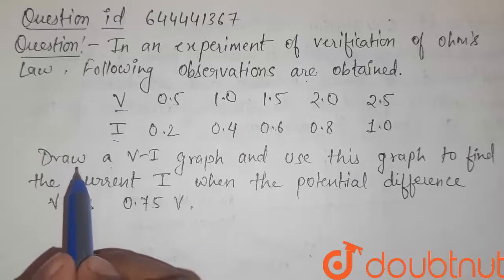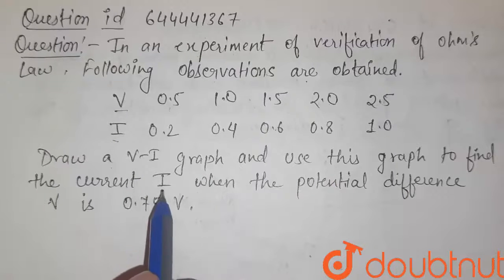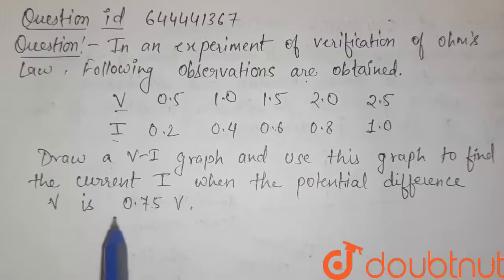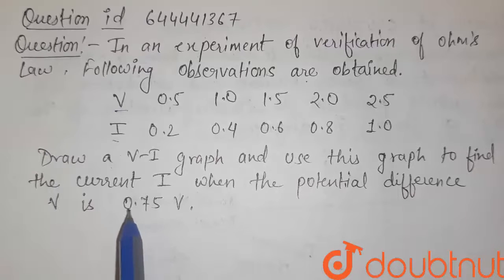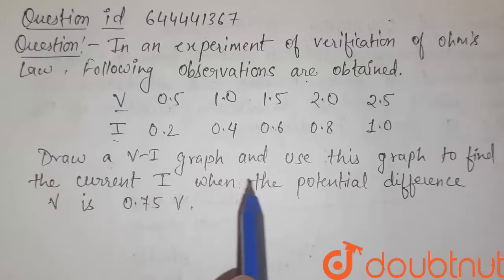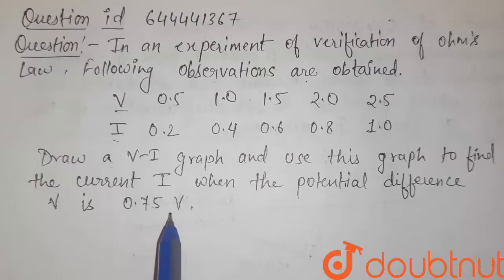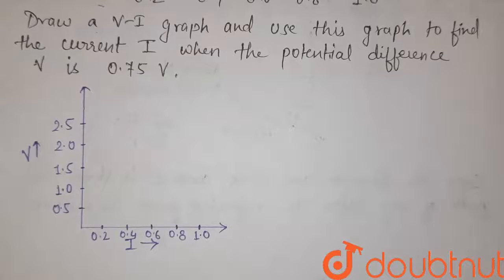Now what we have to do? Draw a V-I graph and use this graph to find the current I when the potential difference is 0.75V. So we have to draw a V-I graph, that is graph between potential difference and current, and through this graph we have to find the current when potential difference is 0.75 volt. So let me draw the graph.